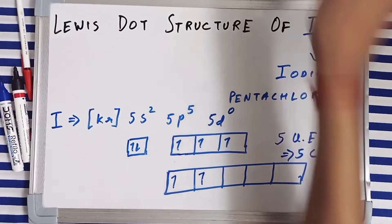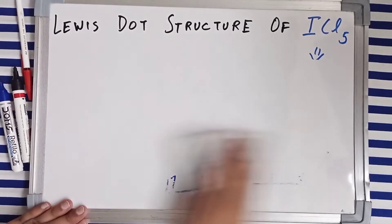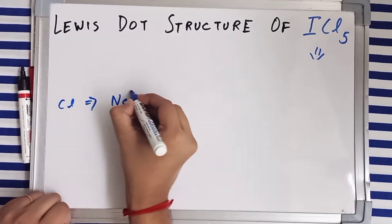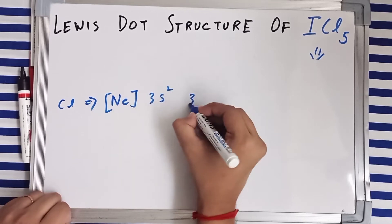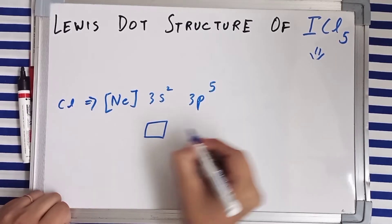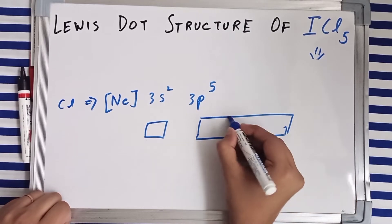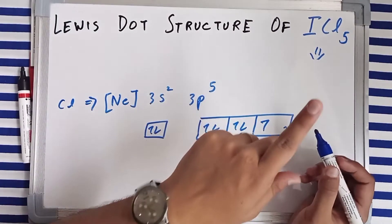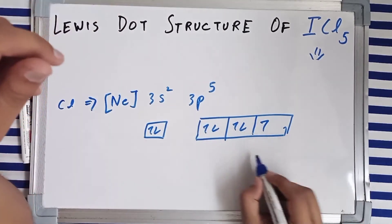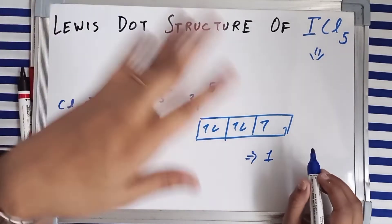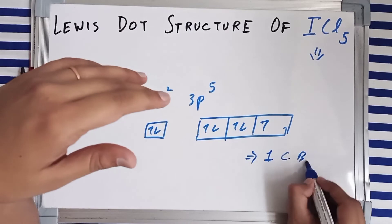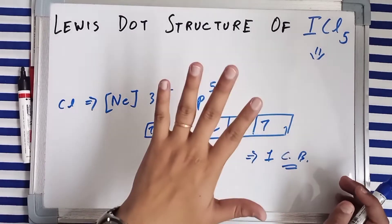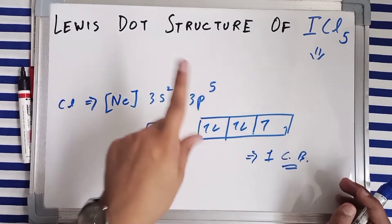Now let's talk about the electronic configuration of chlorine. Chlorine is a third period element and its electronic configuration is 3s² 3p⁵. The orbital diagrams are shown here. Chlorine has a single unpaired electron, meaning it can make just a single covalent bond — and that is all we will need. So iodine in its second excited state can make five bonds, while chlorine in its ground state makes just one.